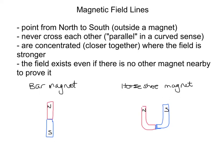There's a few things you have to know about the field lines themselves. Field lines point from north to south outside a magnet. They never cross each other. Think of it as being parallel, but they're going to be curved, so it's not actually parallel. They'll be more concentrated where the field is stronger. So the stronger the field, the more lines we draw.